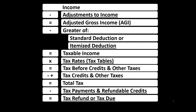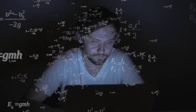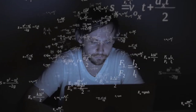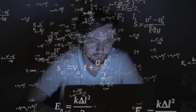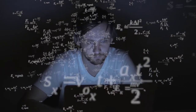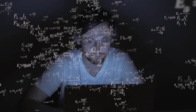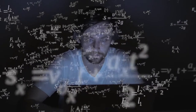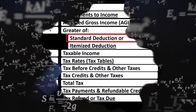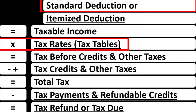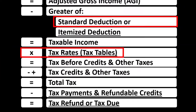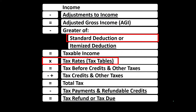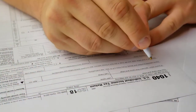Easiest to do that by visualizing the tax formula. Different filing statuses such as single, head of household, and married filing joint will have major impacts on the standard deduction, as well as the tax rates. The progressive tax tables will be dependent upon the filing statuses.